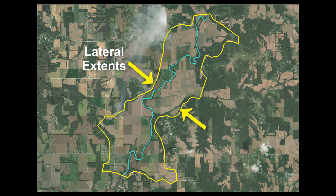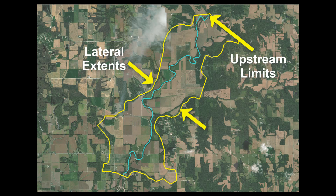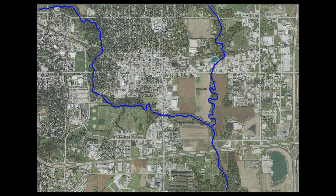Domain limits include the lateral extents as well as the upstream and downstream limits of the model. This example project location is for a bridge crossing located upstream of the confluence of two rivers. Flow is generally north to south.